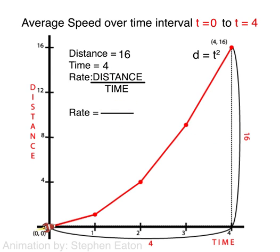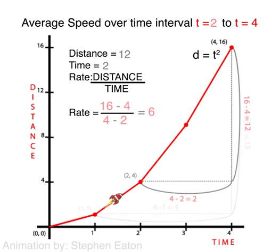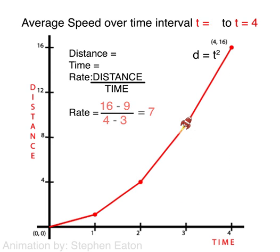From time 0 to time 4, we had an average rate of speed of 4 miles per minute. 5 miles per minute from time 1 to 4, 6 from time 2 to time 4, and 7 from time 3 to time 4. This pattern suggests that the average rate of speed from time 4 to time 4,